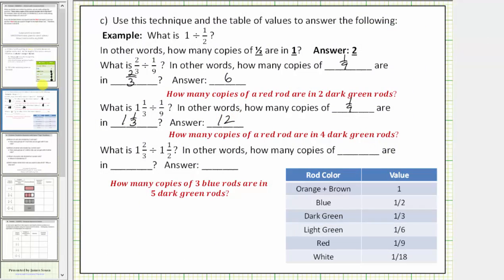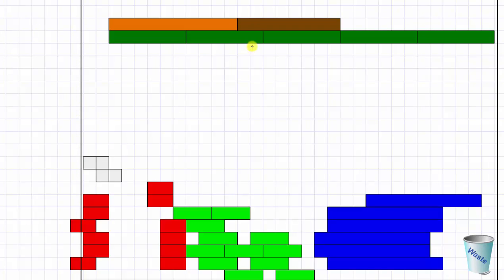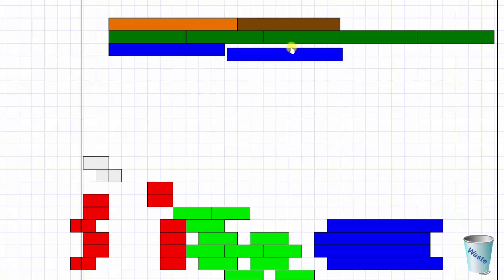For the last question, what is one and two thirds divided by one and one half? How many copies of one and one half are in one and two thirds? Because one blue rod equals one half, one and a half equals three blue rods. Because one dark green rod equals one third, one and two thirds equals five dark green rods. So we need to determine how many copies of three blue rods are in five dark green rods. Three blue rods equals one copy of one and a half, so there is one copy of one and a half.